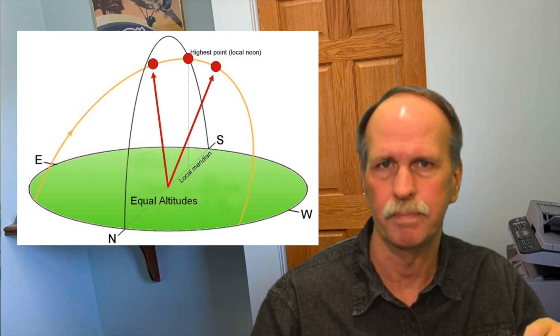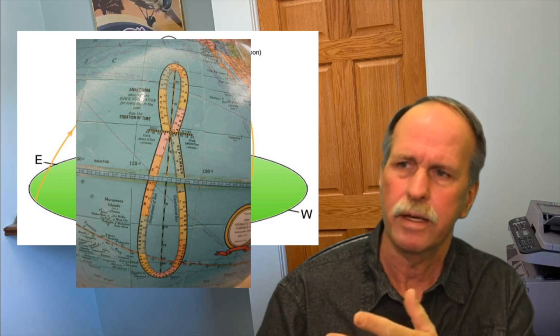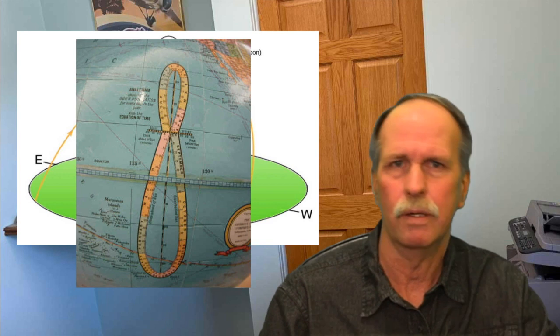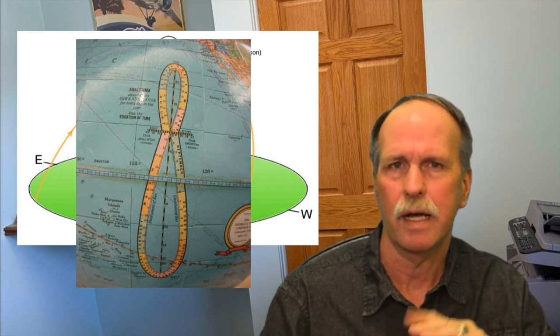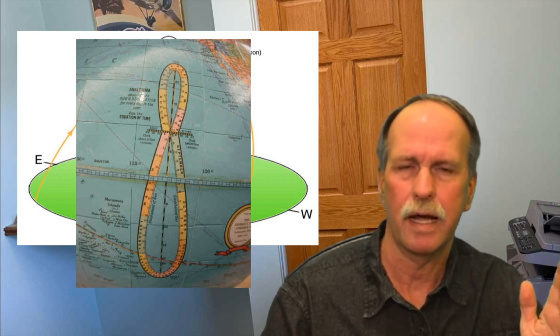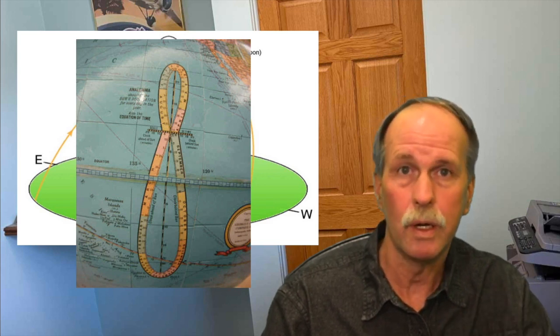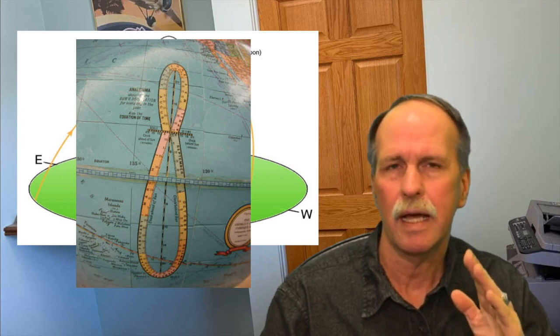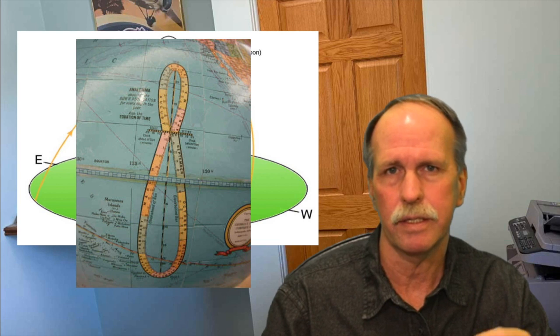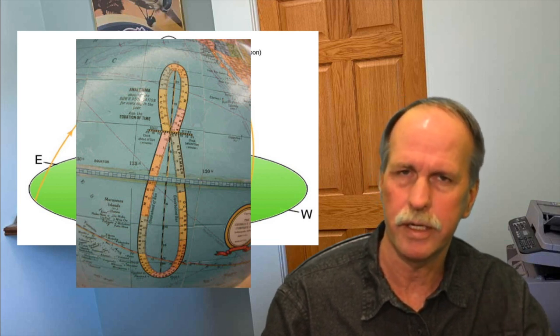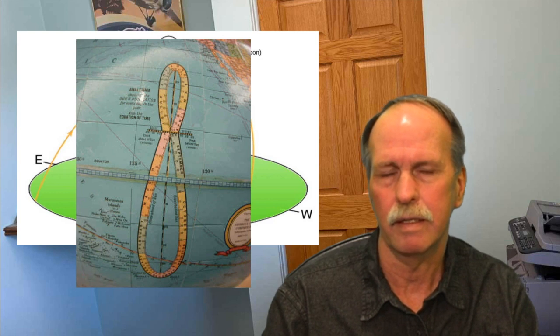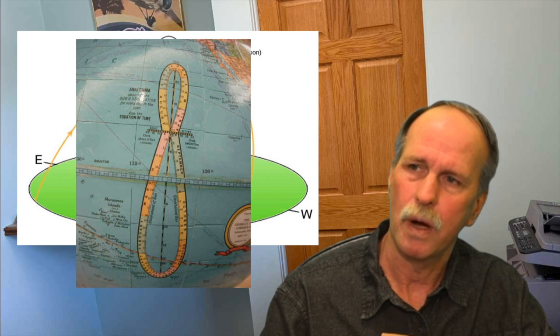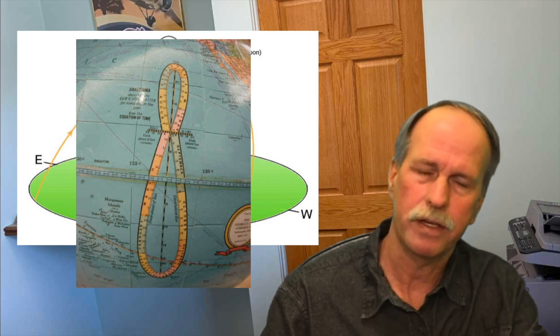Now, what would that look like on the analemma? Imagine that we're on an island in the eastern Pacific here that is on that black and yellow line. Every time that black and yellow line passed overhead of our little island, our watch would read 12 noon. But, because of the changes in the velocity of the earth in its orbit, actual or apparent solar noon may arrive a little bit early, or it may arrive a little bit late, by up to 15 minutes either way. And that is why the solar analemma is this figure eight shape.